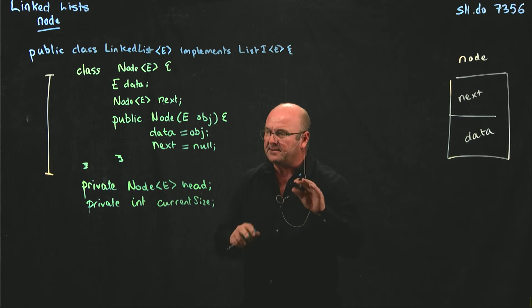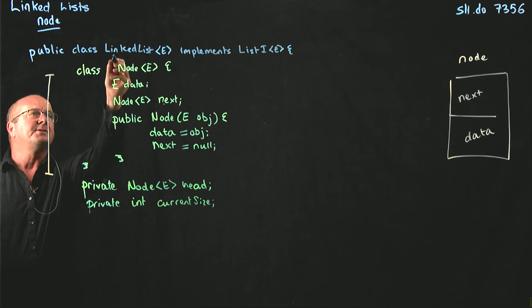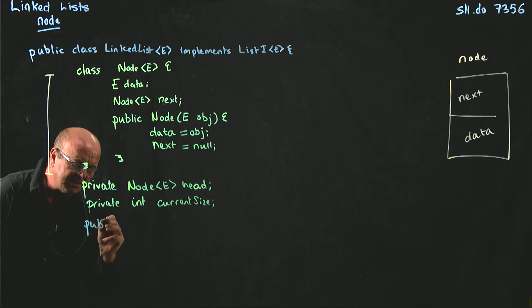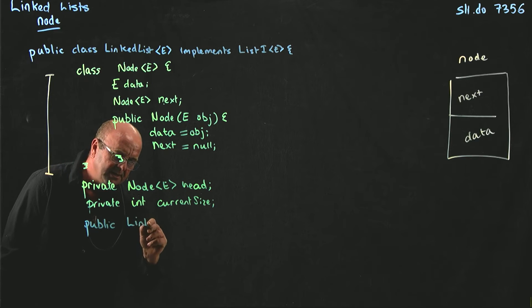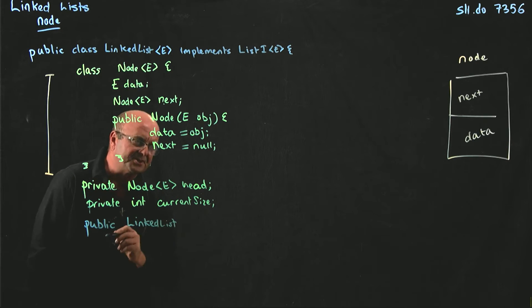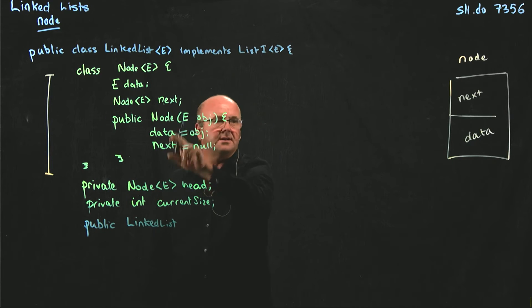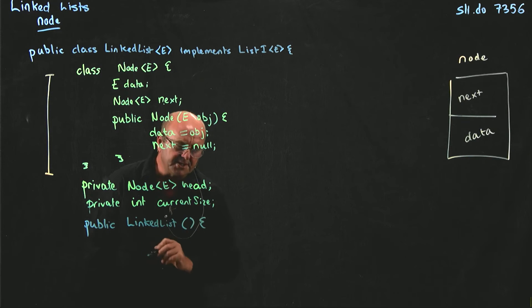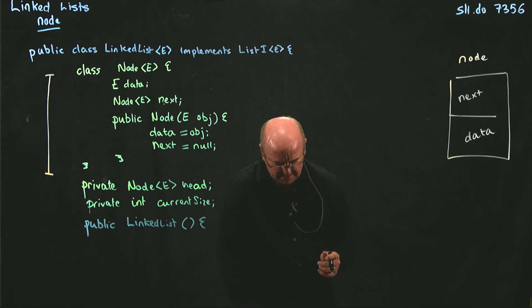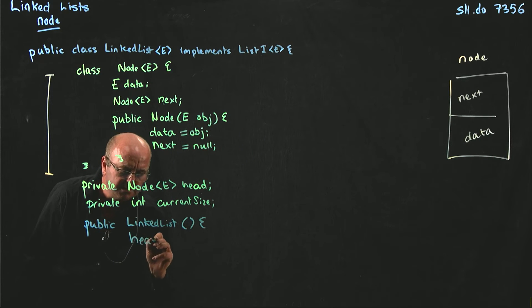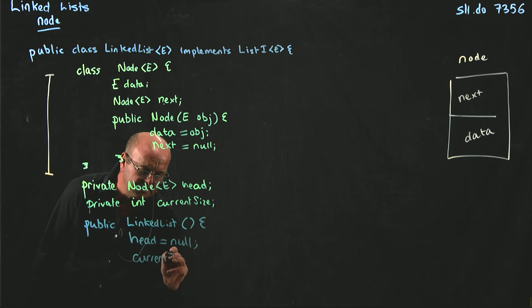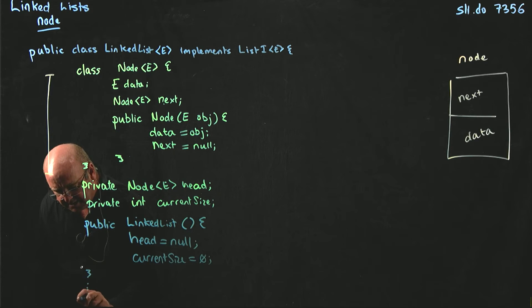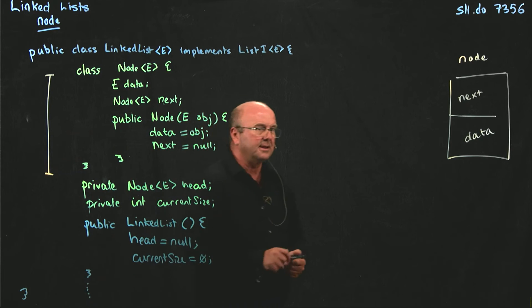And then, just to round out this section of our code, we're going to have our constructor for our linked list. So it's just public LinkedList. And remember when we write our constructors, we don't have the E in the constructor. And we're going to have a default constructor. We're going to override the default constructor here. And we're going to set head equal to null and we're going to set currentSize equal to zero. Then you're going to have a bunch of other code down here, and then the end of the linked list class.